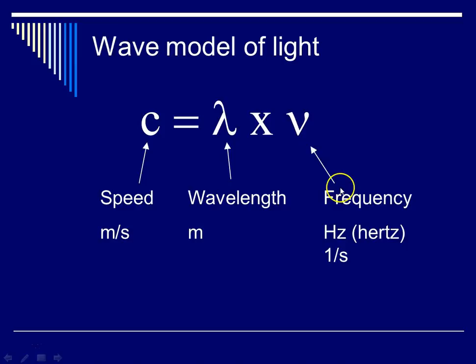So speed in meters per second is equal to wavelength, expressed in the unit meters, times frequency, which has the unit hertz, which is the same as 1 over seconds, or an inverse second.